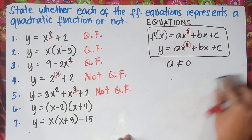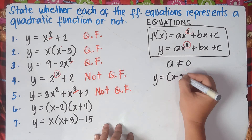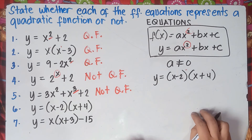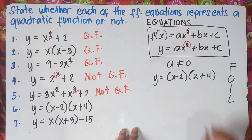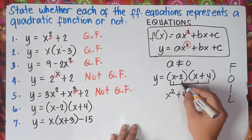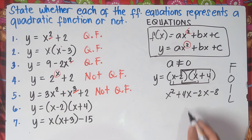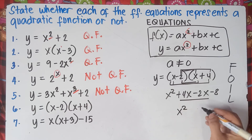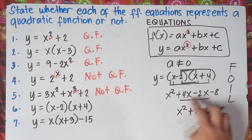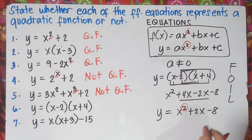Number 6: we need to simplify. y = (x − 2)(x + 4). Using the FOIL method — First: x · x = x²; Outer: x · 4 = 4x; Inner: −2 · x = −2x; Last: −2 · 4 = −8. Combining like terms: y = x² + 2x − 8. The highest exponent is 2, so this is a quadratic function.